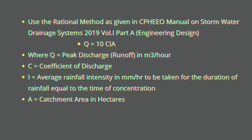The rational method formula is Q = CiA, where Q is the peak discharge in cubic meters per second. C is the coefficient of runoff, which varies by surface type and can be found in the relevant table. i is the average rainfall intensity in mm per hour, taken for the duration equal to the time of concentration. A is the catchment area in hectares, which can be taken from Google Earth.